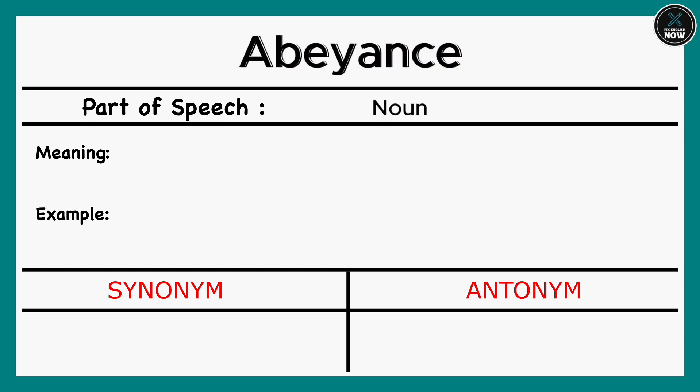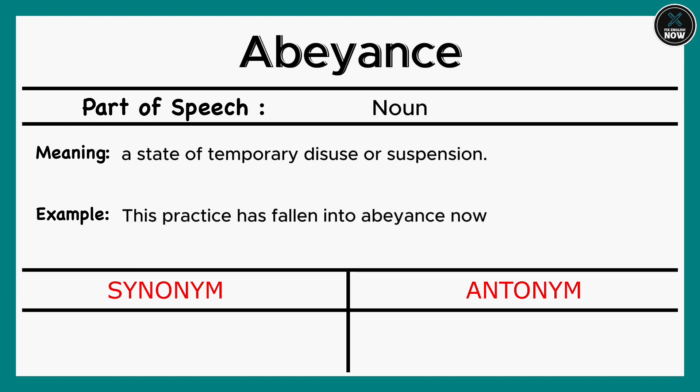Abeyance: A state of temporary disuse or suspension. Example: This practice has fallen into abeyance now. Synonyms: Delay, Interruption. Antonyms: Revival, Continuation.